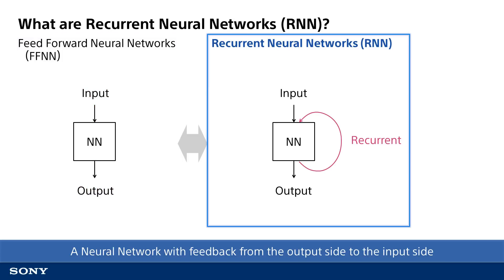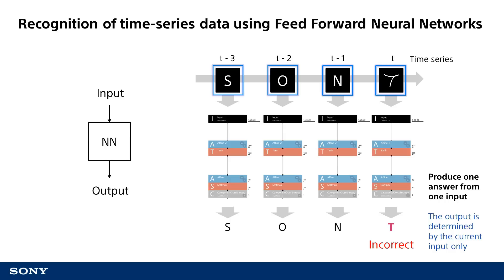In contrast, RNNs are primarily used to process time series data. This neural network includes a feedback loop that sends output of processed information back as an input at the next time step in the sequence. Now that you have a basic idea of an RNN, let's take a closer look at how this neural network with a feedback loop works with actual examples. In this example, multiple letters such as S, O, and N are input in word order and then processed with character recognition logic one by one.